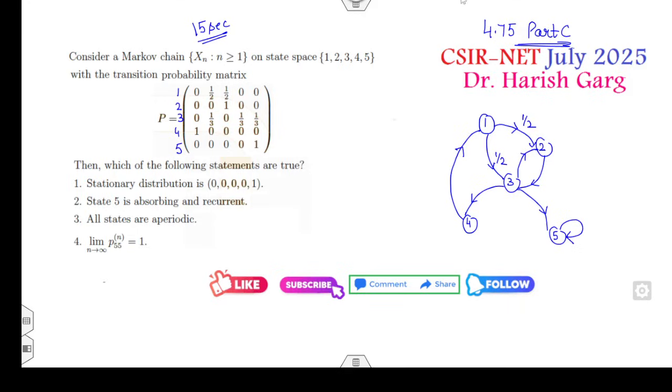So clearly from this transition diagram you can say 5 is my absorbing state. Five is my absorbing state, okay? So every absorbing state is also, we all know, every absorbing state is also my recurrent state.